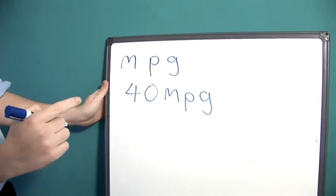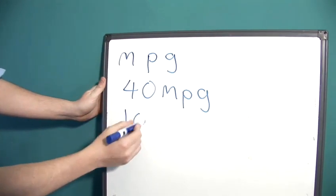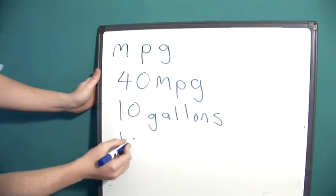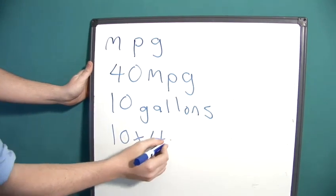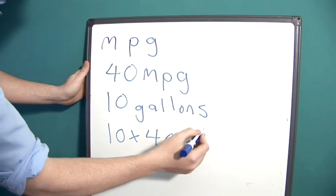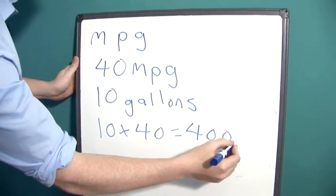This means if we have 10 gallons in our tank, we can travel 10 multiplied by 40 miles on that amount of fuel. This gives us 400 miles.